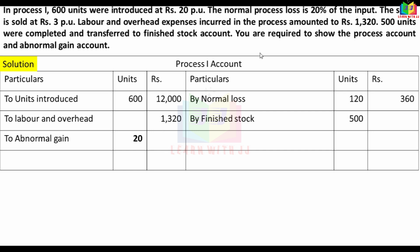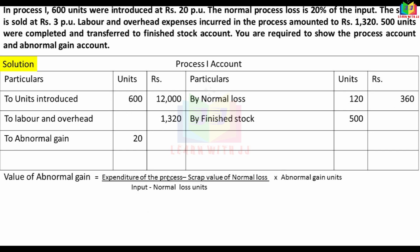The cost per unit is calculated as: total expenditure minus scrap value of normal loss, divided by expected output. That is (Rs.12,000 + Rs.1,320 − Rs.360) ÷ (600 − 120 + 20). Input is 600, normal loss units is 120, abnormal gain units is 20, so the denominator is 540 units. This gives Rs.27 per unit.